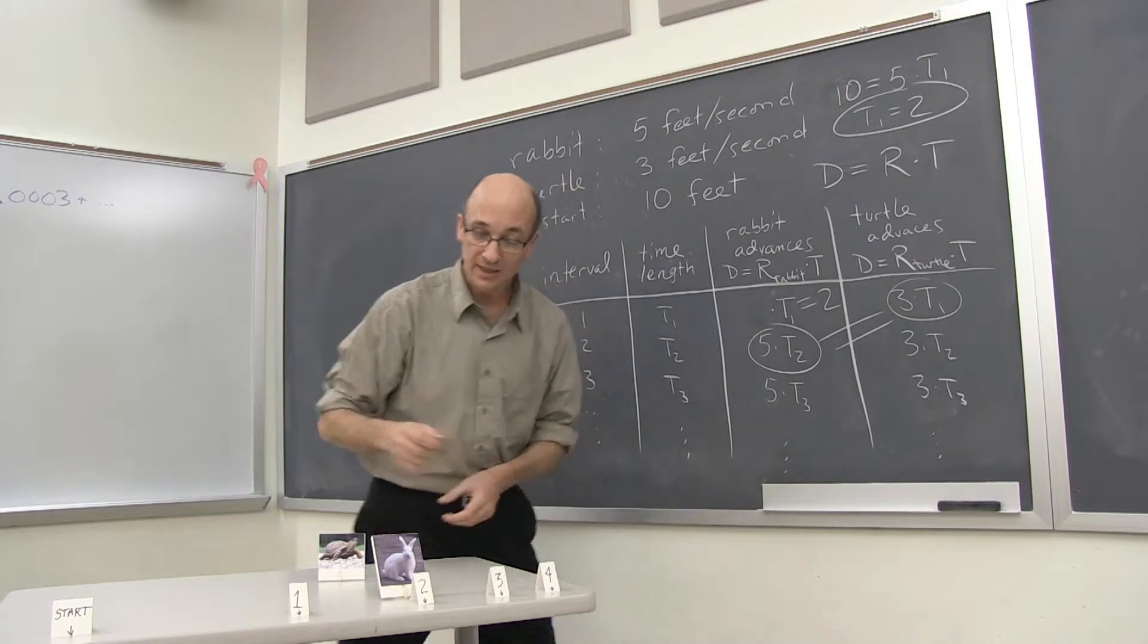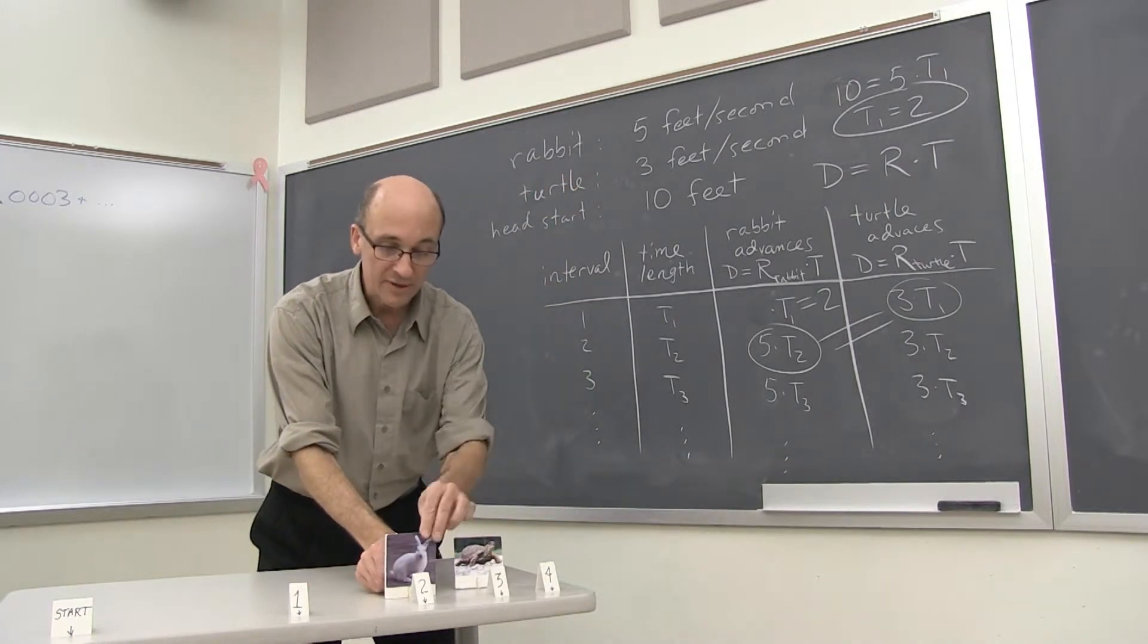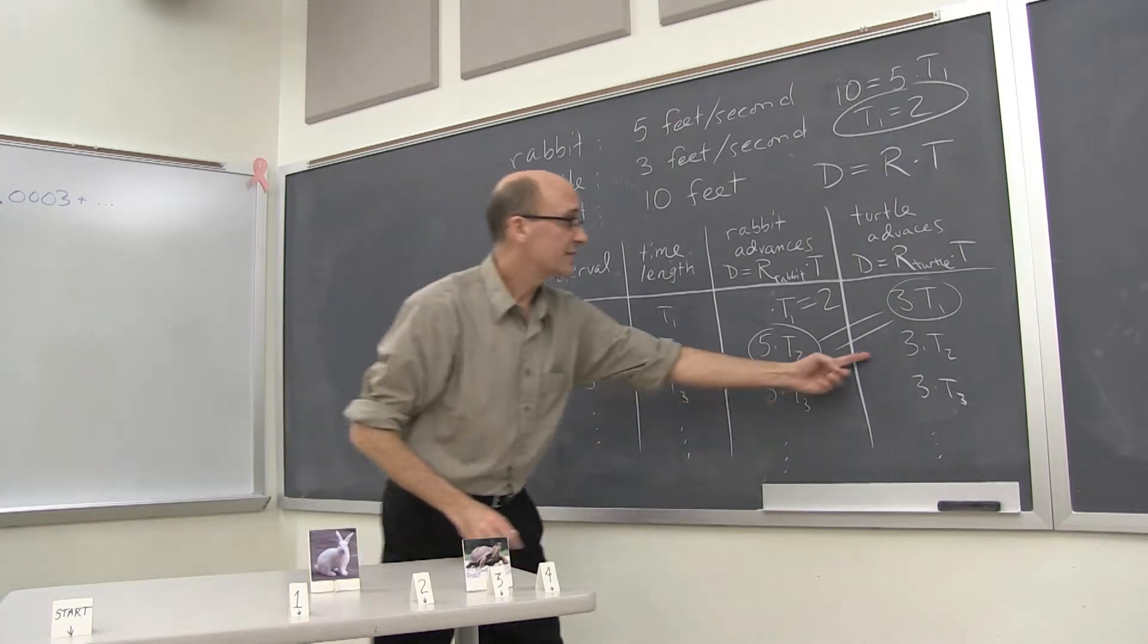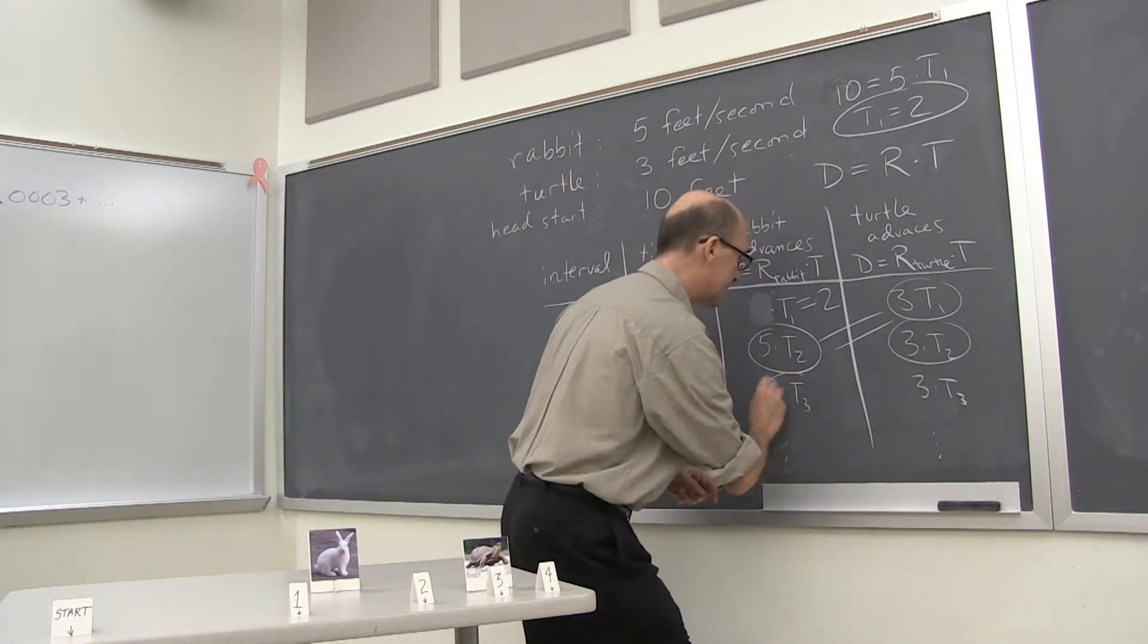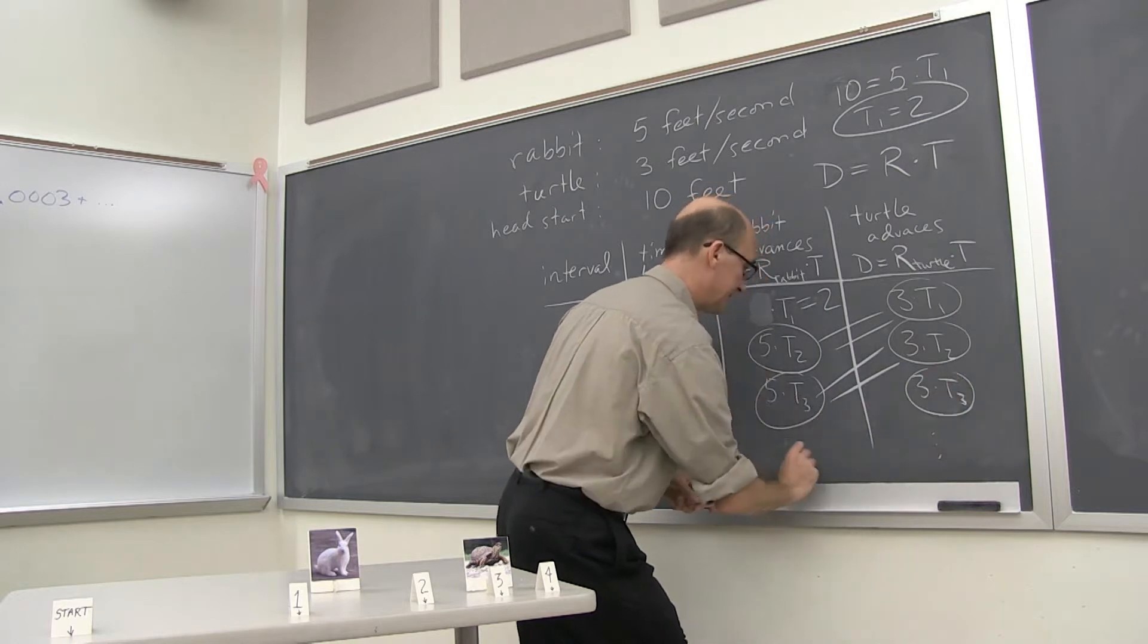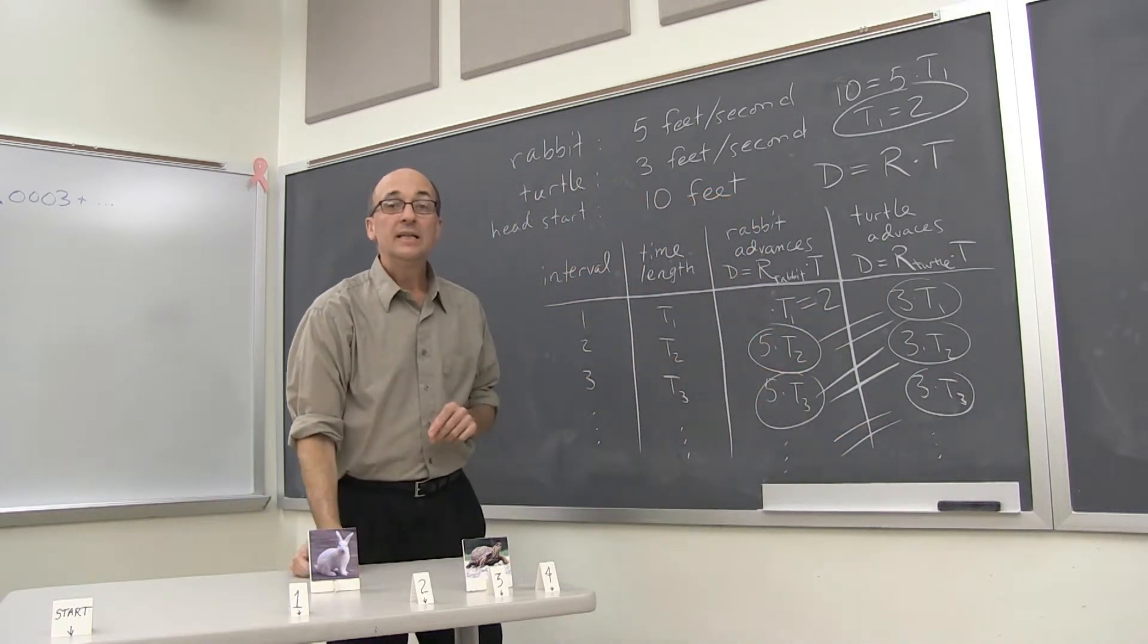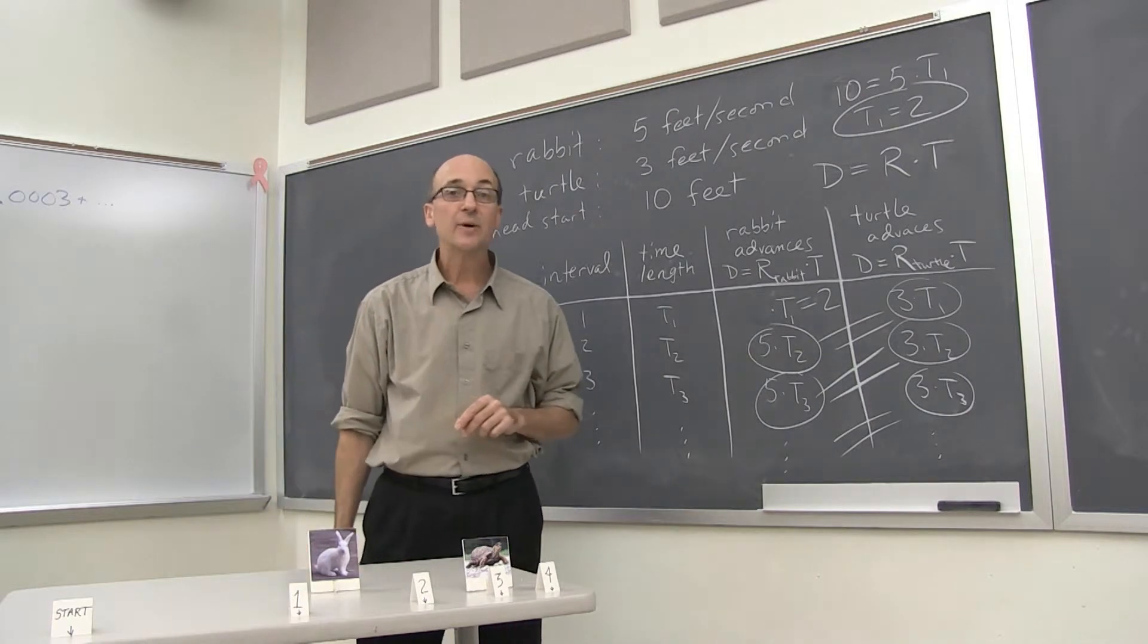Then this goes on. The rabbit covers from two to three. The turtle covers from two to three. But they're offset by one interval. This goes on forever. So these match up. Now, we have an infinite list of equations.